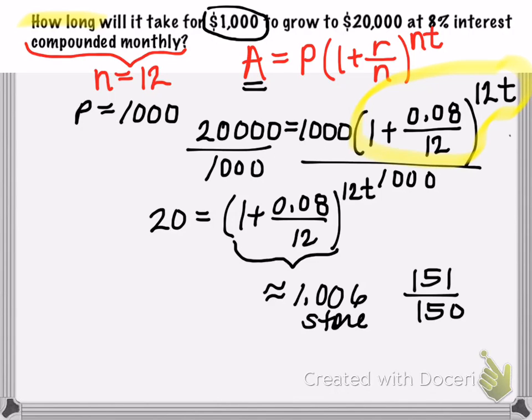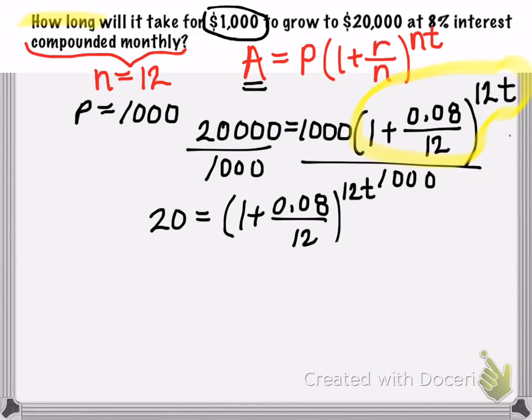So it is up to you whether you want to use the stored value or the exact value. For this example, I'll go ahead and use the exact value since it does convert to an exact fraction. So really I have 20 is equal to 151 divided by 150 raised to the 12t.